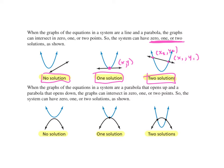If we have two nonlinear equations — so if we have two x squared equations, two parabolas — the same thing happens. If they don't touch, we'll have no solution. If they touch in one spot, we'll have one solution. If they touch in two spots, we'll have two solutions.